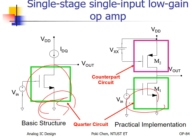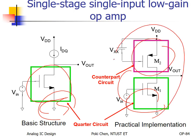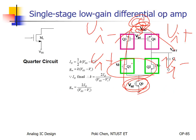Then we flip it to get the counterpart circuit to compose the left half circuit. Usually we have only one input to the left and the other input to the right. So for the counterpart circuit, the input should be fixed. That is the usual case. Then we can go further.